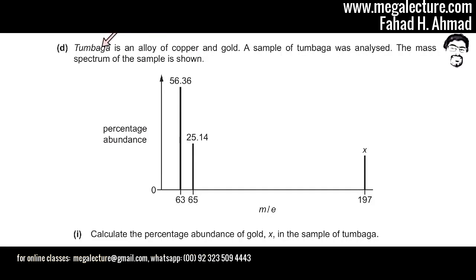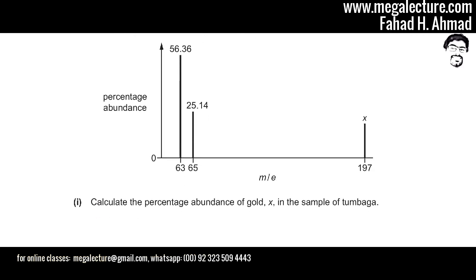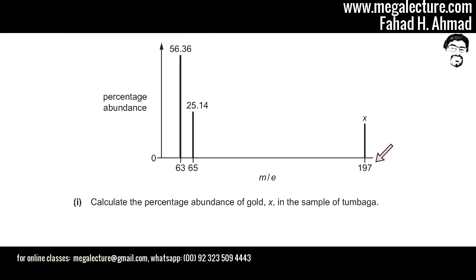Part D states that tumbaga is an alloy of copper and gold, and a sample of tumbaga was analyzed with a mass spectrum shown. The mass spectrum detects the percentage composition of different substances. The mass-to-charge ratios shown are 197, 65, and 63. The percentage abundances given are: mass 63 at 56.36%, and mass 65 at 25.14%, while the percentage for the substance at mass 197 is unknown.